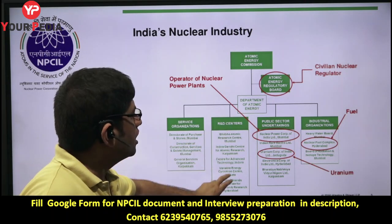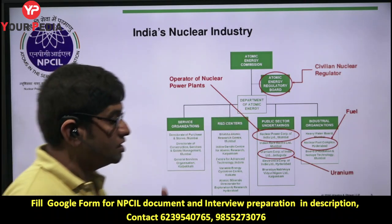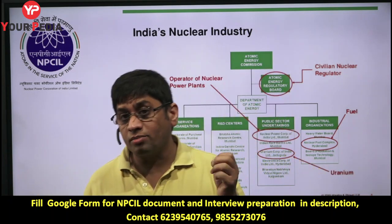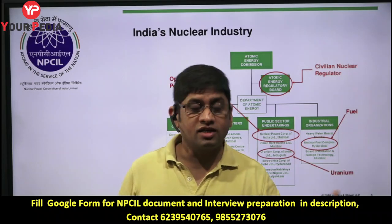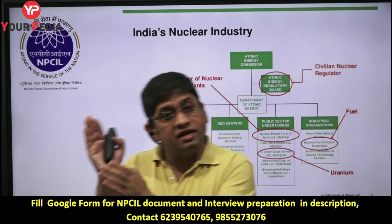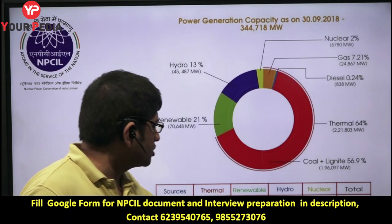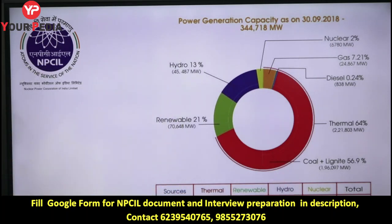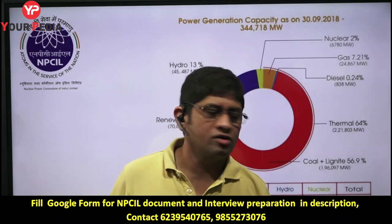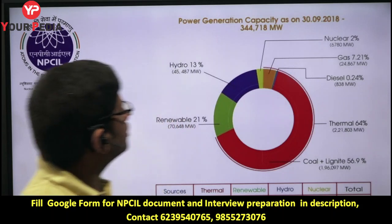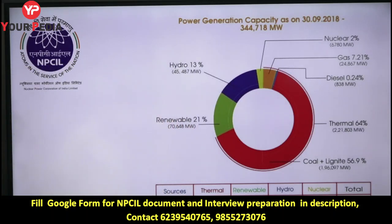One more thing: scientists from BARC may sit in the NPCIL interview panel, so you can expect technical questions similar to BARC. Nuclear power's share in India's total electricity generation is about 2-3%. The total installed capacity in India is approximately 3.44 lakh megawatt (2018 data) — thermal, then renewable, then hydro, then nuclear. Nuclear is approximately 6,780 MW out of the total 3.44 lakh MW.